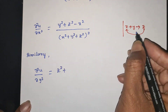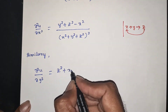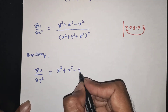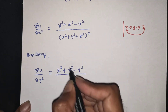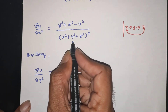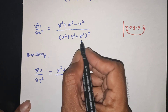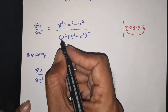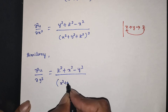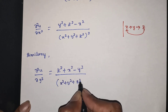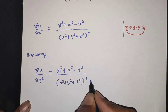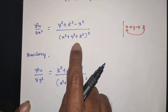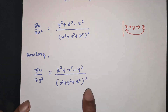By symmetry, substituting x→y, y→z, z→x: ∂²u/∂y² = (x² + z² − y²) / (x² + y² + z²)², and ∂²u/∂z² = (x² + y² − z²) / (x² + y² + z²)².